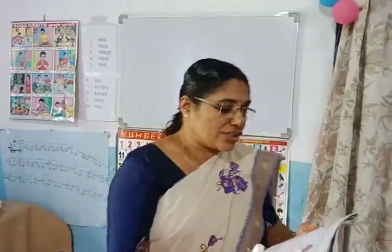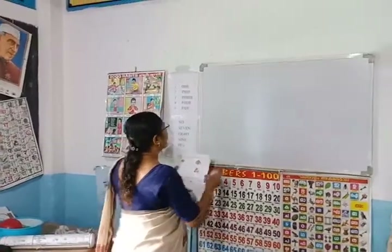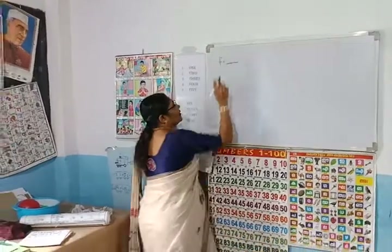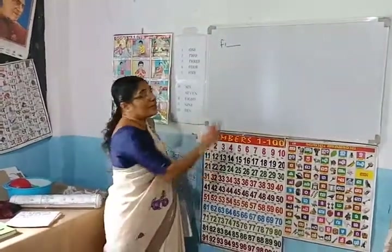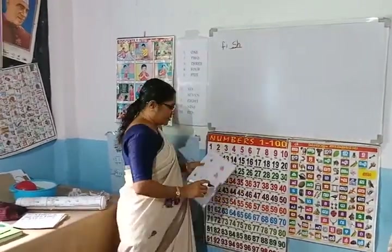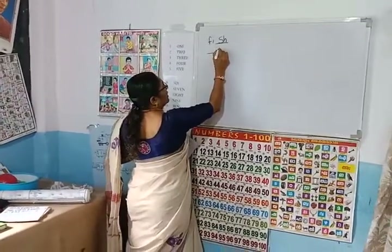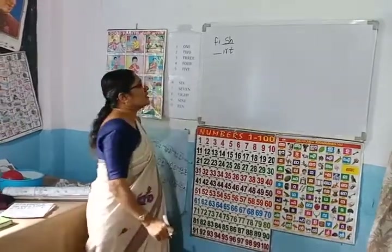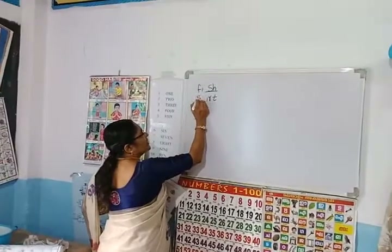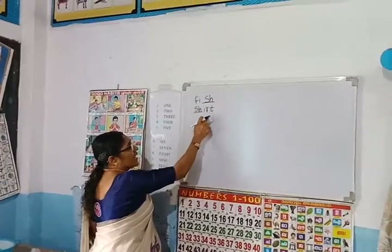Let us practice to do some words. Here, which blend words come here? S, H — which blend words come here? Yes, S, H, I, R, T — shirt!